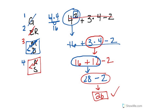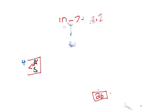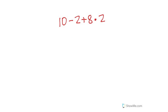Notice, guys — I did not necessarily go from left to right. I did the order of operations. Now let's do a simple one. Here I have 10 minus 2 plus 8 times 2. This is the last example, and then I'm going to have you guys try some on your own.